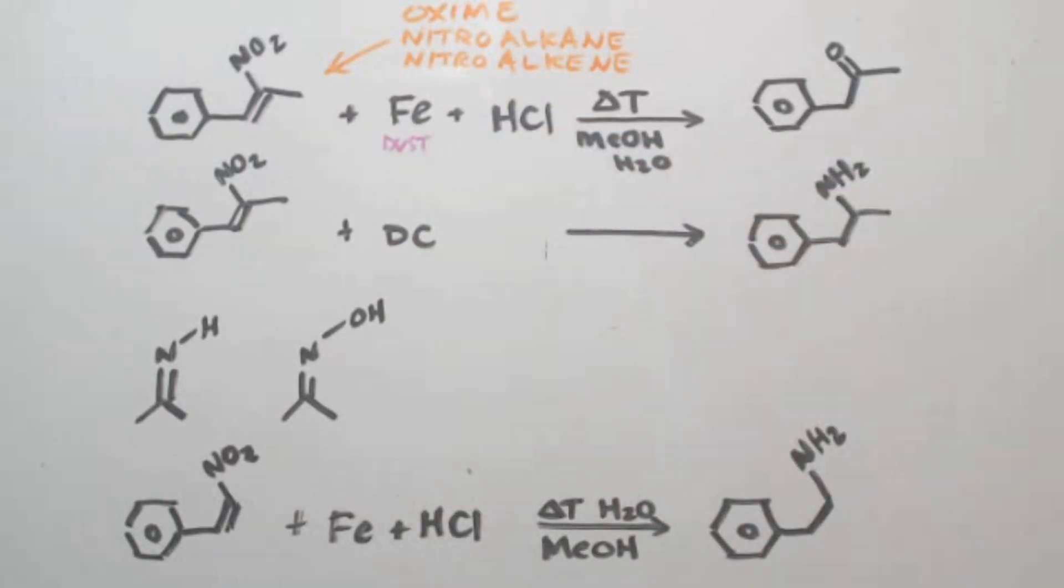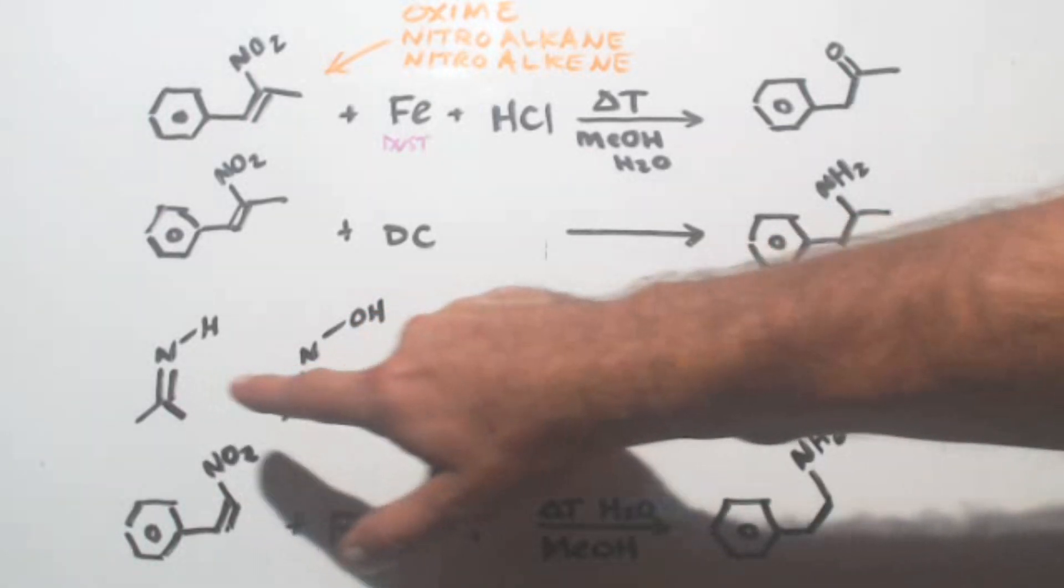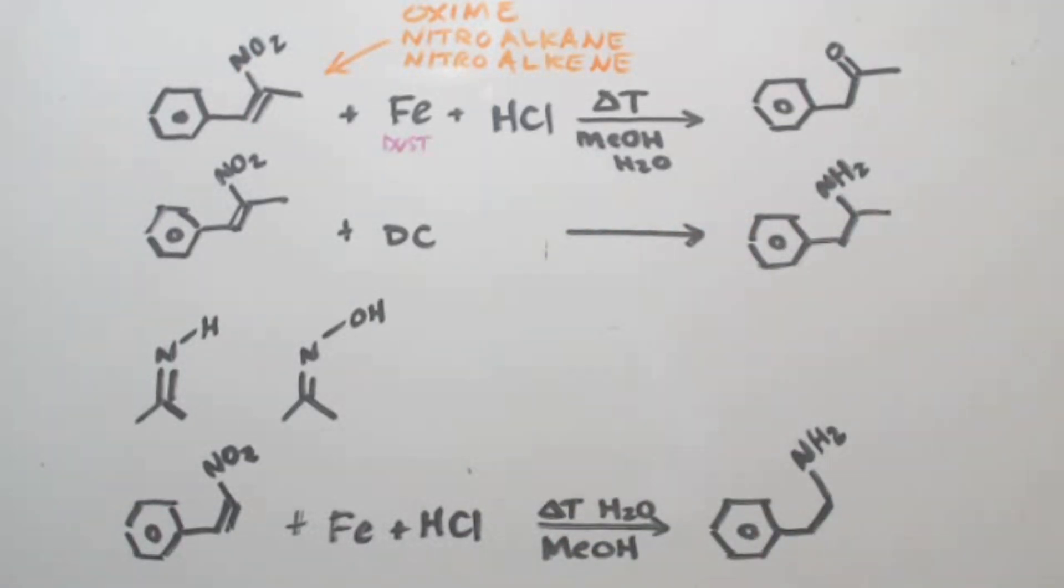Now the reason why this works, let me go over an oxine first. What is an oxine? Here's an imine. The only difference between an imine and an oxine is the H, the hydrogen, is replaced by a hydroxy group. That's the only difference.